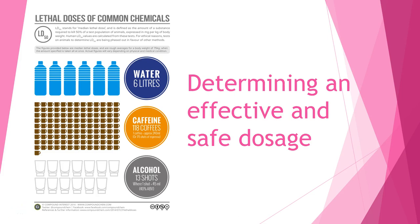Now that we've looked at how we manufacture drugs and how we get them into the body, the next thing we need to look at is determining an effective and safe dose. The main thing to remember is that pretty much anything can be toxic to our body in extreme amounts — this includes vitamins, and as this graphic shows, even things like water or coffee have lethal doses. This doesn't mean you're going to die from a normal amount of coffee.